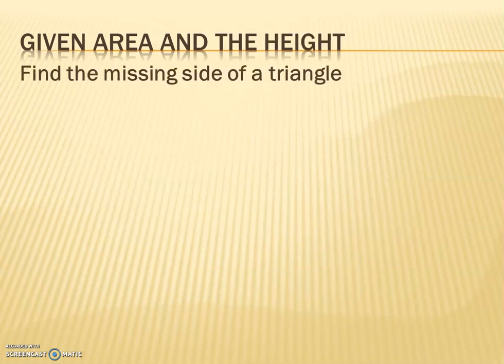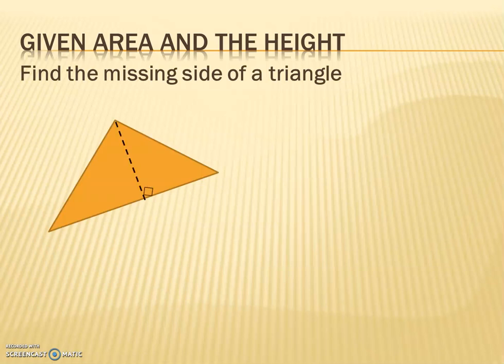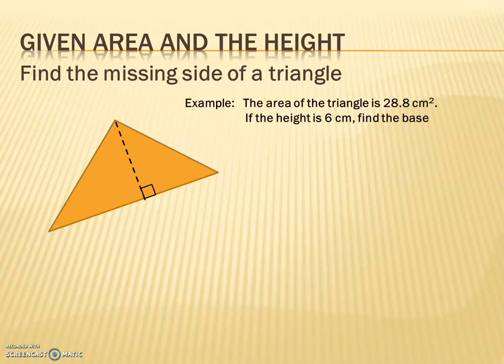I'm going to give you the area and the height of a triangle and ask you to find the missing side. In this case, it's going to be the base. So here's the example: the area is 28.8 square centimeters. If the height is 6 centimeters, find the base. So 28.8 is the area. The base is unknown, but we know that the height is 6.